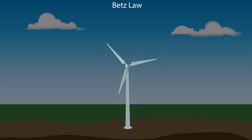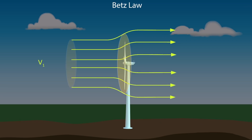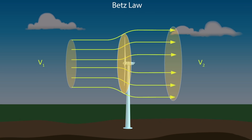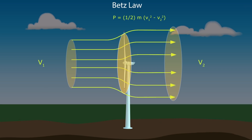Let's prove this theory. We assume the average wind speed through the rotor area is the average of the undisturbed wind speed before the wind turbine, called V1, and the wind speed after passage through the rotor plane, called V2 — that is, (V1 + V2) / 2. The mass of air streaming through the rotor during one second equals the density multiplied by the swept area and the average wind speed through the rotor area.